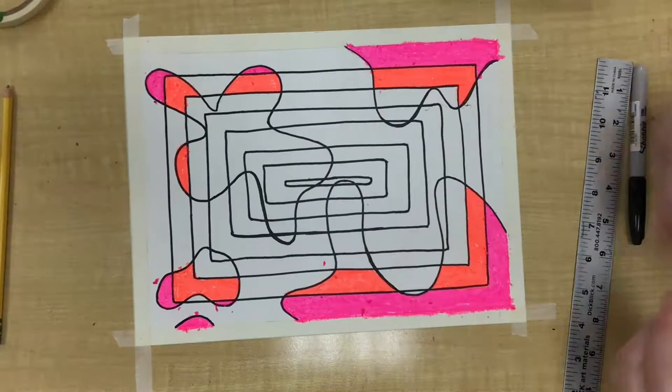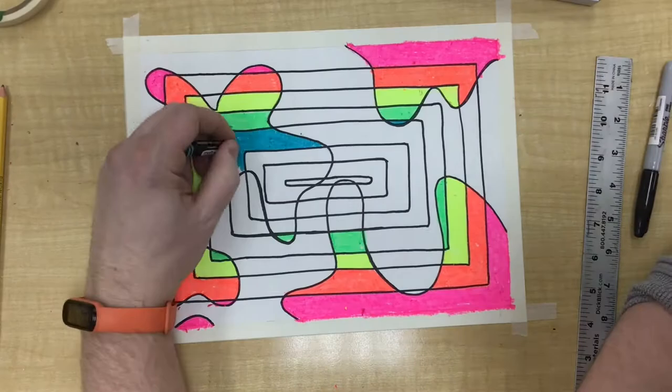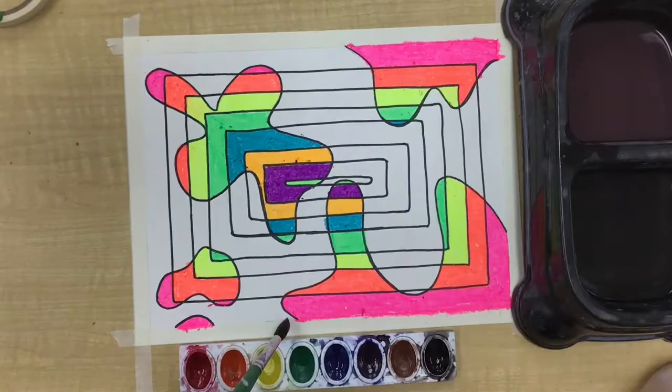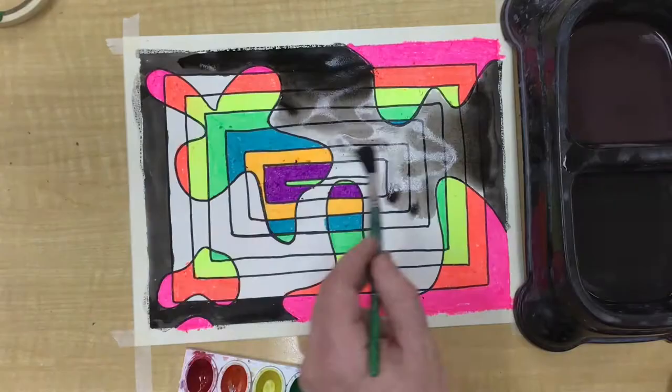After coloring all of those in, I painted with a little bit of black paint around the perimeter. I got the rest of the paper wet so that it would draw some of that black paint into the middle and let it fade across, turning to a wash that gets lighter and lighter gray as it goes into the middle.